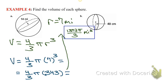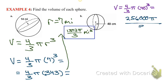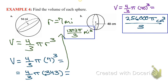Go ahead and do part b on your own — it gives you the radius. You need to get a calculator out because you can't do this without one — you've got to cube. What I did was cube 40, then multiply it by 4, and keep the 3 on the denominator. Remember, it's centimeters cubed.